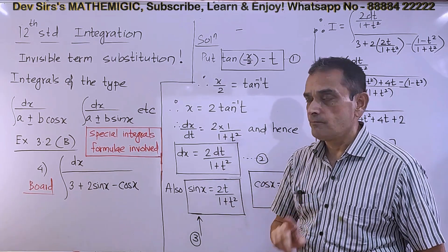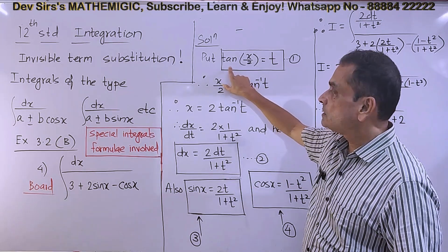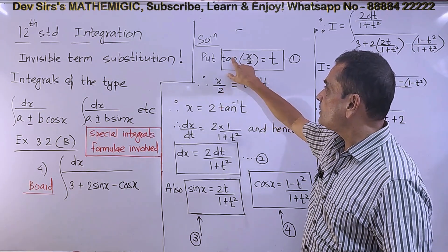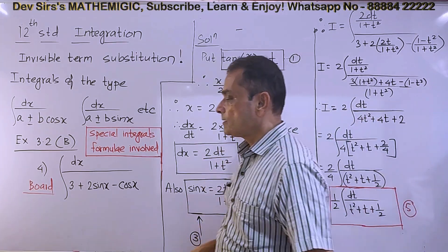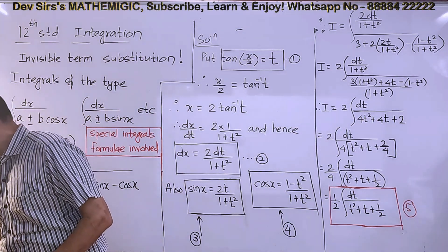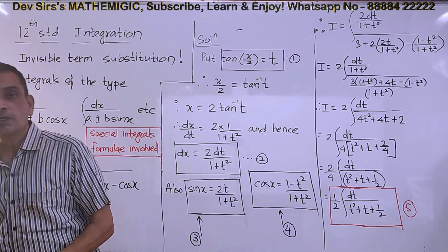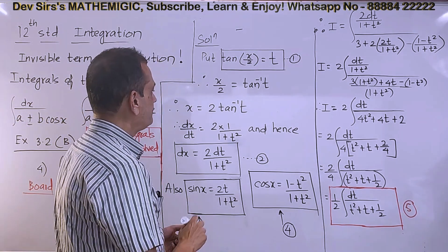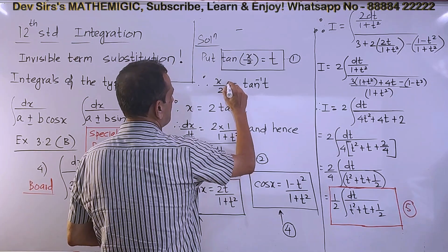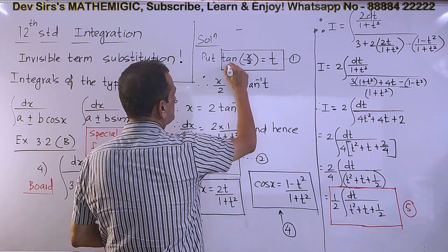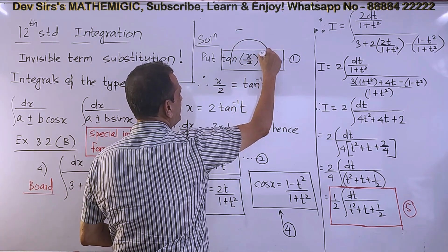Now tan(x/2) is not present in the original integral. It is not visible. Therefore, I have named it invisible term substitution: tan(x/2). So half the angle. If 2x is present, put tan x equal to t. If x is present, put tan(x/2) equal to t. That is called invisible term substitution.